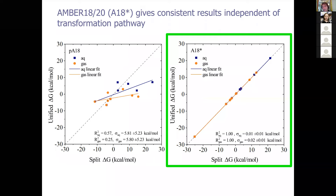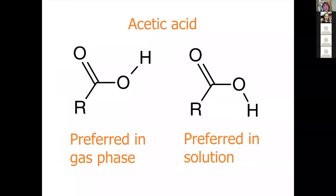There was a subtle error in the code involving interactions across the soft core common core boundary, particularly involving 1-4 terms — 1-4 electrostatics and Van der Waals terms — which were not being appropriately scaled by lambda during the transformation. When this got fixed, everything lined up. As part of a validation paper in JCIM, we did further validation tests, including looking at systems like acetic acid. The problem with the 1-4 terms didn't appear in delta delta G if the conformational ensembles were similar in the two environments.